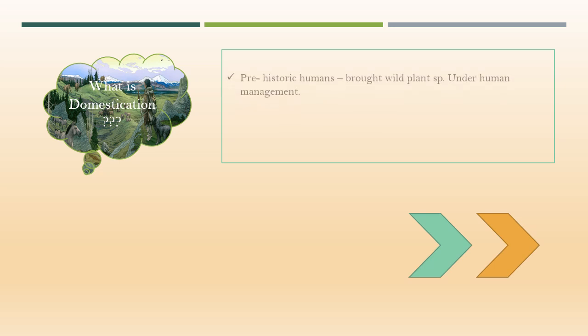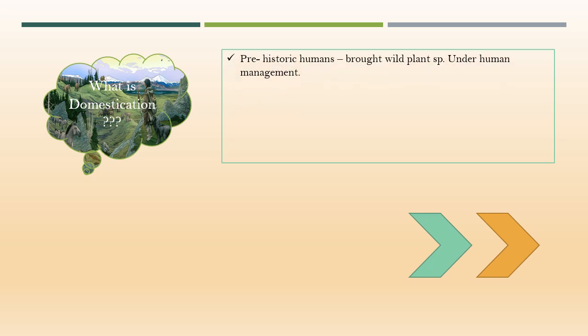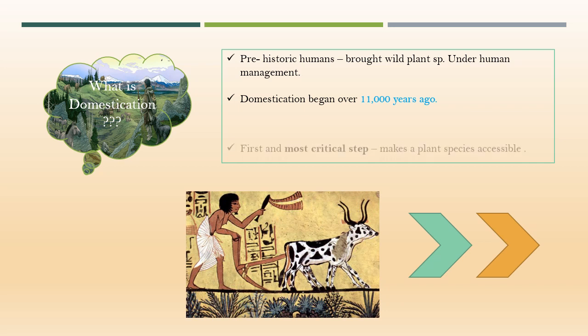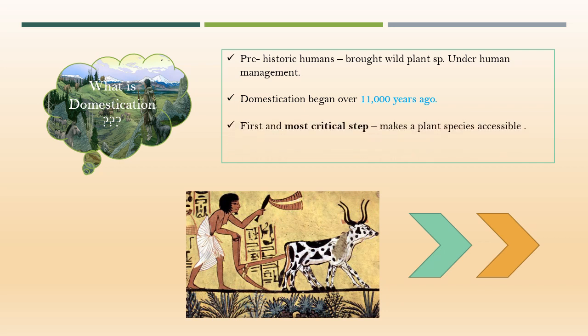The first phase consisted of domestication, during which prehistoric humans brought wild plant species under human management. Domestication began over 11,000 years ago, when humans are believed to have started agriculture. Domestication is the first and most critical step as it makes a plant species accessible to crop improvement efforts, and it continues till today.